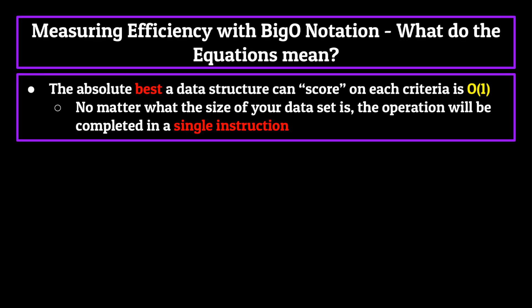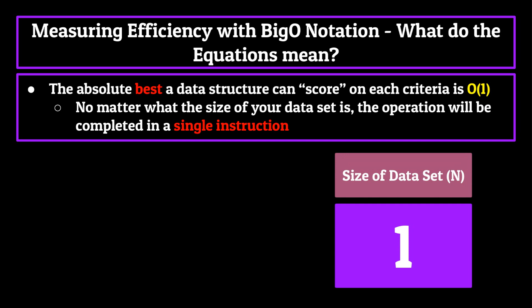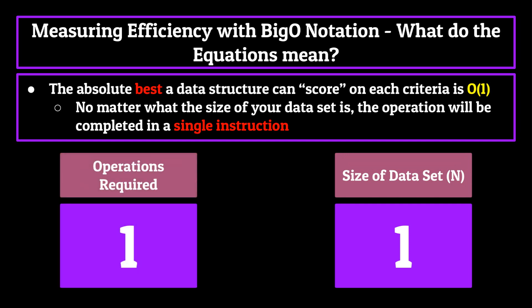The absolute best a data structure can score on each criteria is a time complexity equation of O of 1. This essentially means that no matter what the size of your data set is, the operation will be completed in a single step. If your data has one element, it'll finish in one step. If your data has 100 elements, one step; 1 million elements—doesn't matter, the computer will finish the function in one step.